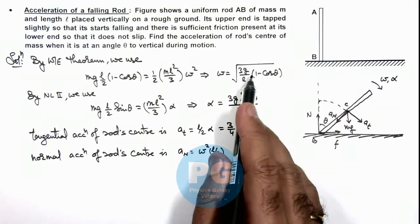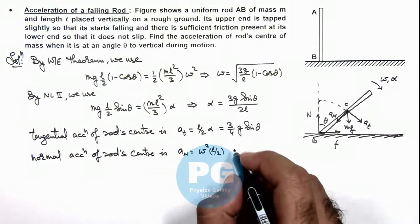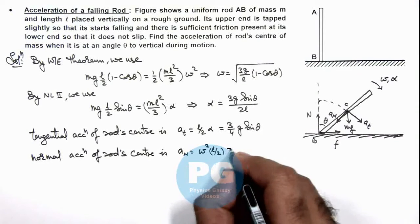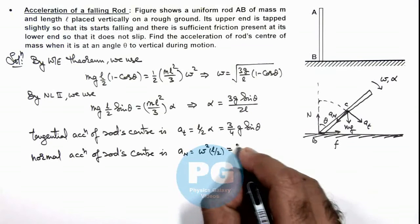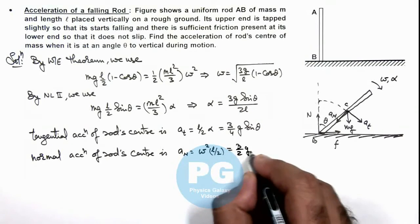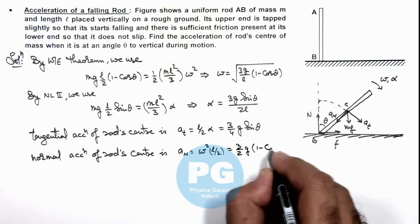If we substitute the value of normal acceleration, we are getting after putting the value of omega, (3/2)g multiplied by (1 - cos θ).